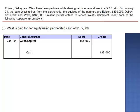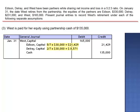So if total capital decreases by $135,000 and West's capital went down by $165,000, it means that the remaining partners, Edison and Del Rey, will have their capital balances increased by a total of $30,000. We use the same ratio, 5 to 2, or 5 sevenths to 2 sevenths, to allocate the $30,000 difference. We credit Edison's capital account for 5 sevenths of $30,000, which is $21,429, and credit Del Rey's capital account for 2 sevenths, which is $8,571.